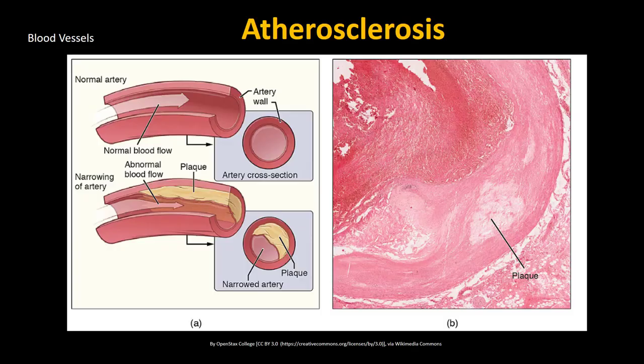As we age, our blood vessels tend to become more rigid and apt to develop atherosclerosis. As shown in the diagram, an atherosclerotic vessel is significantly more narrow than a normal healthy artery. This places older adults at risk for the development of heart attacks and strokes. With the increased rigidity of the vessels, older adults are also more likely to develop chronic hypertension.